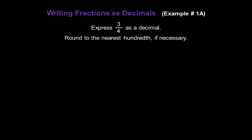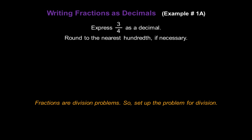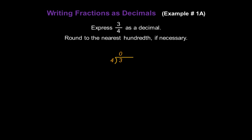Now let's look at some examples of writing fractions as decimals. Let's express 3 fourths as a decimal and round to the nearest hundredth if necessary. Since fractions are division problems, I'm going to set up the problem for division — 3 divided by 4. Now, 4 doesn't go into 3, so we put a 0 above the 3 to start our division, and we'll put a decimal after the 3 and after the 0 in our answer. I'll add another 0 after the 3. How many times does 4 go into 30? 7 times. 4 times 7 is 28, so I subtract 28 from 30 and get a remainder of 2.